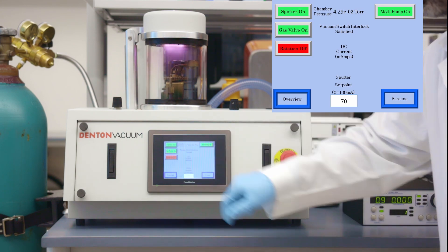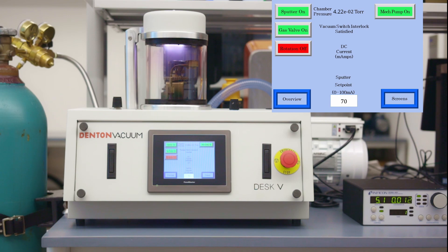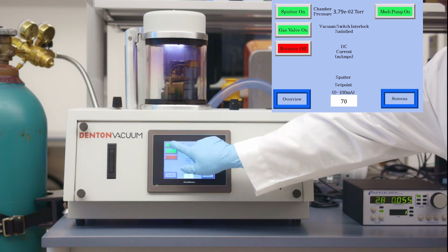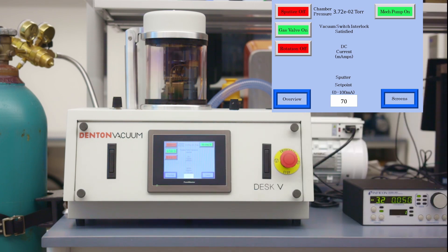Now tap on sputter off. We will see a purple glow in the glass jar indicating the sputter process has begun. Once the thickness monitor reads 0.05 kilo angstrom, we can stop the sputtering process by tapping on sputter on.